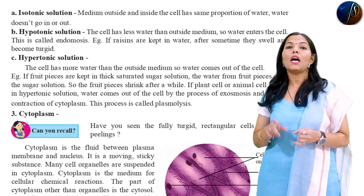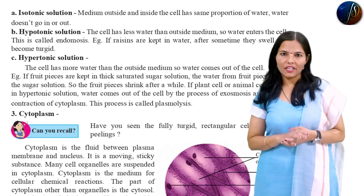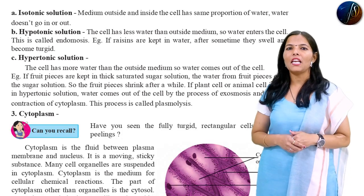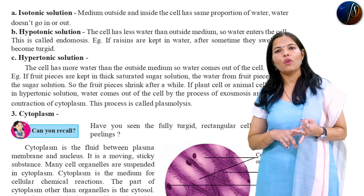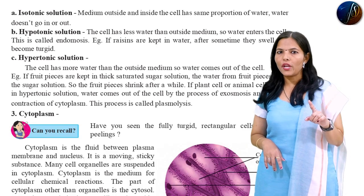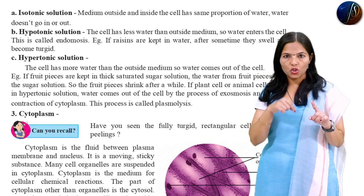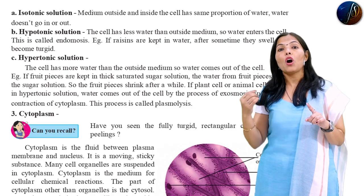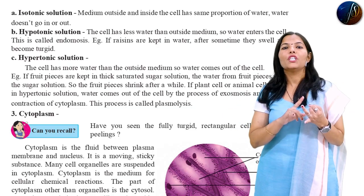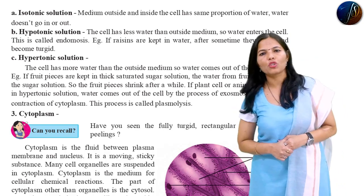So I think you have solute, solvent, and solution — the difference is clear. If you have one example: you take a glass of water and add one spoon of salt, and it forms salty water. In this example, which is the solute, solvent, and solution? Write down your answer in the comment box.